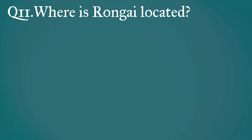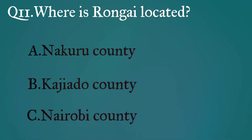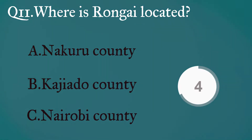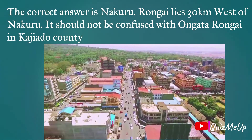Question 11: Where is Rongai located? A: Nakuru county, B: Kajiado county, C: Nairobi county. The correct answer is Nakuru — Rongai lies 30 kilometers west of Nakuru. However, it should not be confused with Ongata Rongai, which is in Kajiado county.